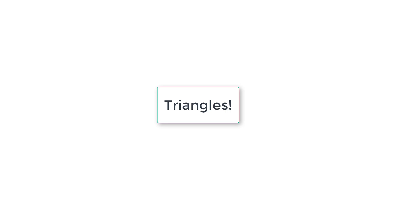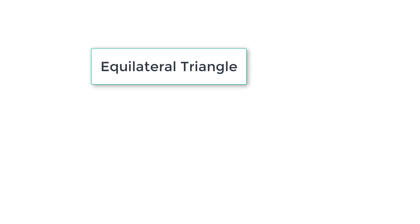We will ask the user to input the lengths of three sides of a triangle and based on that user input we will evaluate and check what type of triangle it is. There are basically three types of triangle: equilateral triangle, isosceles triangle, and scalene triangle.